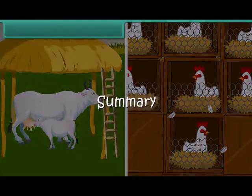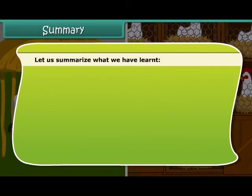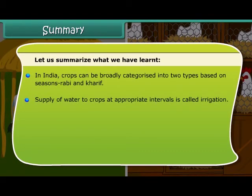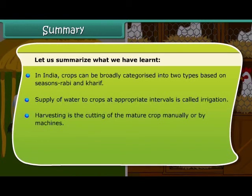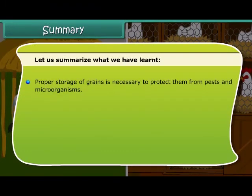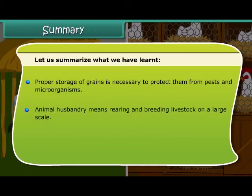Summary: In India, crops can be broadly categorized into two types based on the seasons they are grown in — Rabi and Kharif. Supply of water to crops at appropriate intervals is called irrigation. Harvesting is the cutting of the mature crop manually or by machines. Separation of the grains from the chaff is called threshing. Proper storage of grains is necessary to protect them from pests and microorganisms. Animal husbandry means rearing and breeding livestock on a large scale.